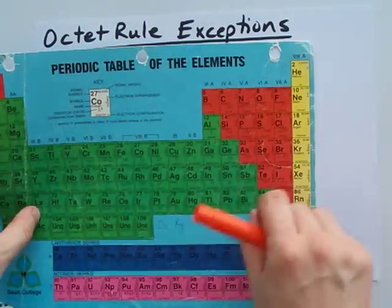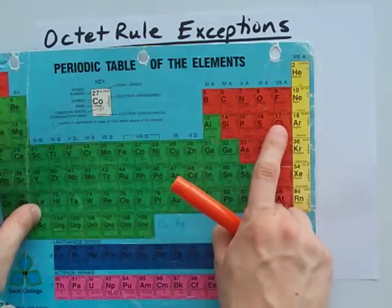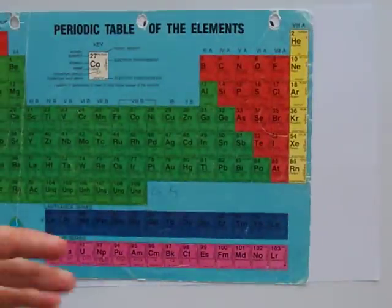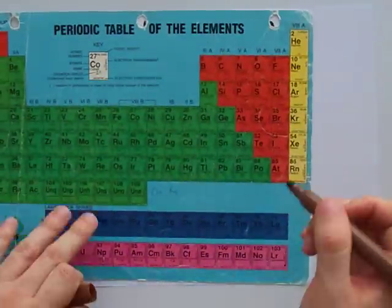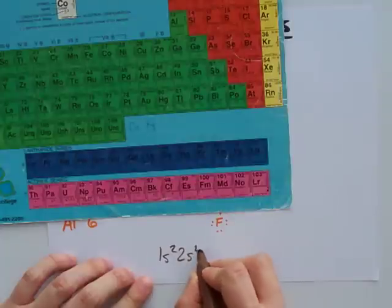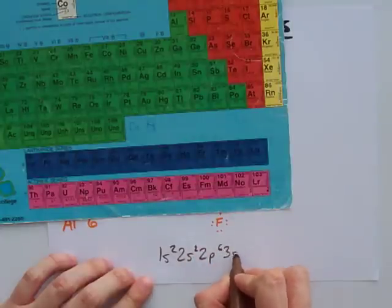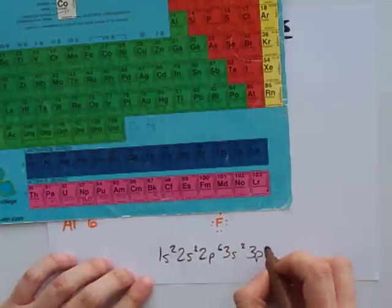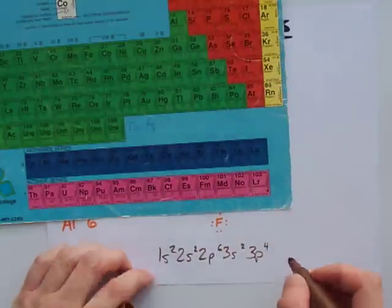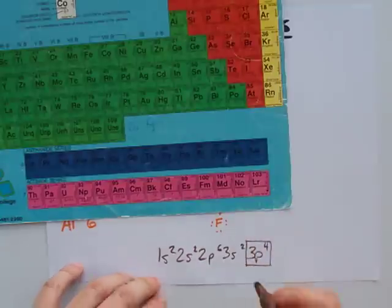Now, the problem is, once you get down into your P's, your S's, your Cl's, the electron configurations for those, which I'll write here, 1s2, 2s2, 2p6, 3s2, 3p something. For P, it would be 3, for S, it would be 4, etc.